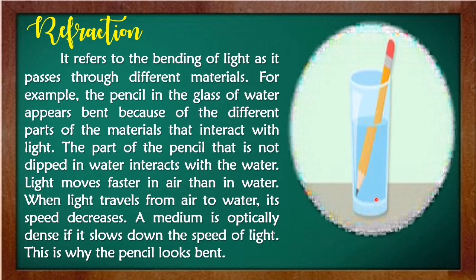The part of the pencil that is not deep in water interacts with the air. Light moves faster in air than in water. When light travels from air to water, its speed decreases. A medium is optically dense if it slows down the speed of light. This is why the pencil looks bent.